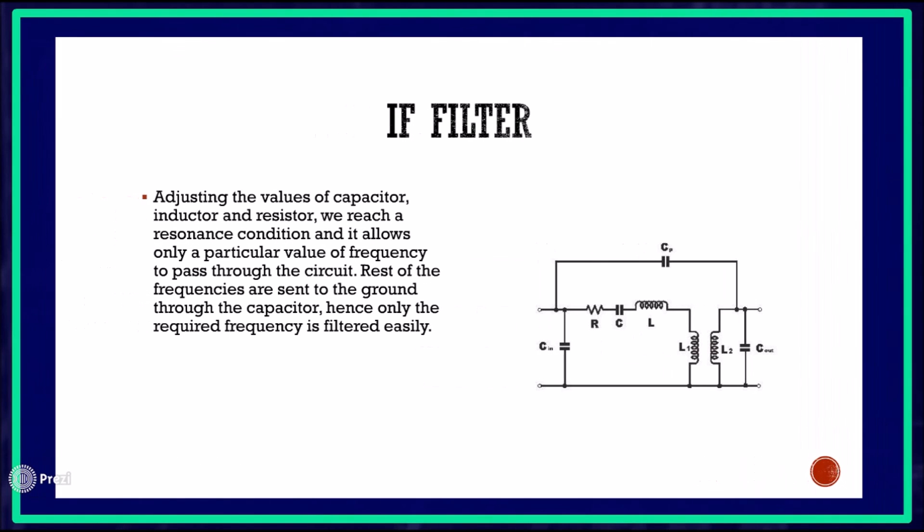Next is the IF filter. By adjusting the values of capacitor, inductor, and resistor, we reach a resonance condition that allows only a particular value of frequency to pass through the circuit. The rest of the frequencies are sent to the ground through the capacitor. Hence, only the required frequency is filtered easily.